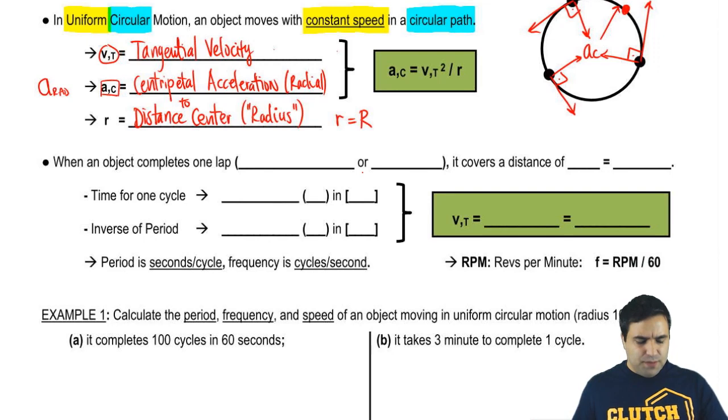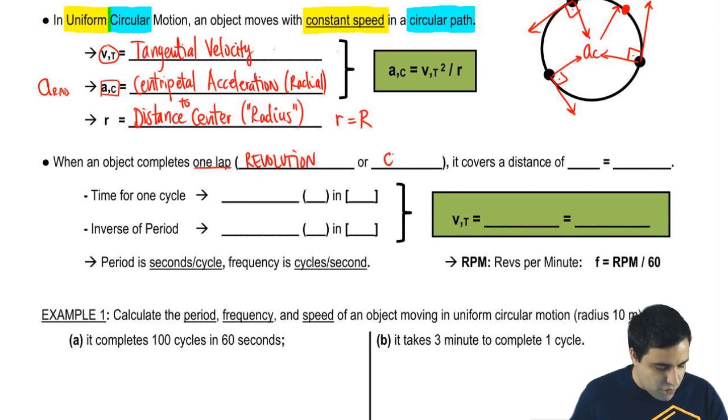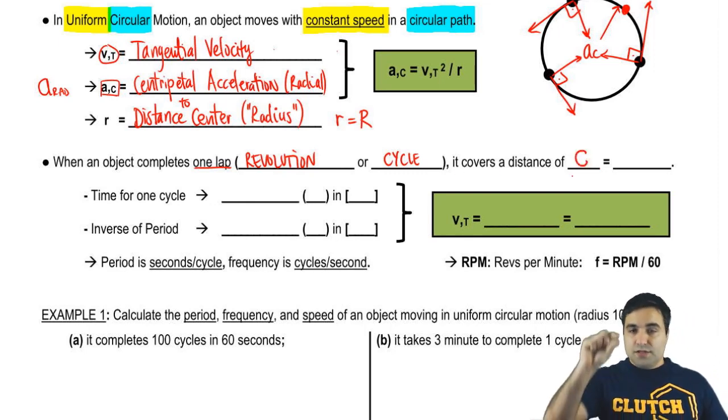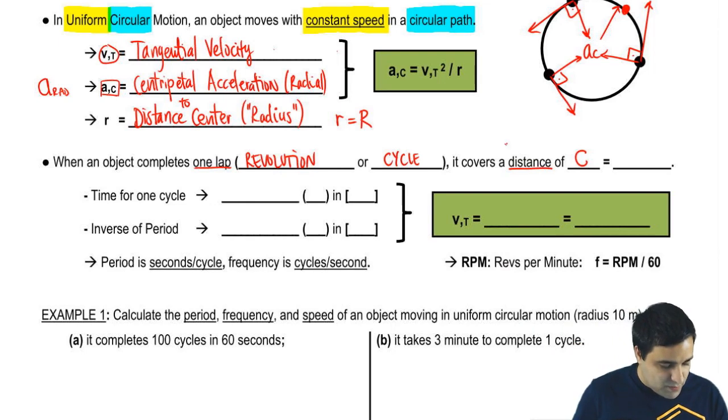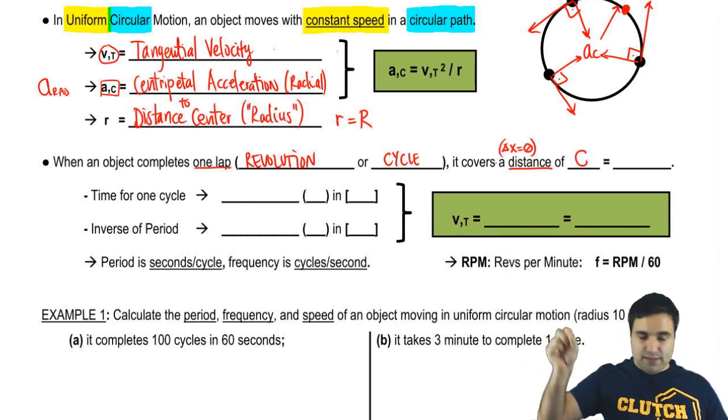All right, let's move on here. So when an object completes one lap, which we can also refer to as one lap is the same thing as one revolution. That's just a different name for it. One rotation, one spin, one cycle. So those are some of the keywords. One lap, one revolution, one cycle. It covers a distance of one circumference. So if you go around an entire circle, you covered one circumference for distance. Your displacement is technically zero if you go around an entire point back to the same point.